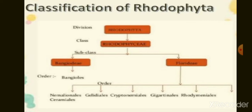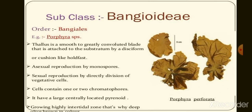Class Rhodophyta is divided into two subclasses: Bangiodeae and Florideae. General characteristics of Bangiodeae, with Porphyra as an example: the thallus is a greatly convoluted blade attached to the substratum by a disc-form or cushion-like holdfast. Asexual reproduction is by monospores. Sexual reproduction is directly from vegetative cells. Cells contain one or two chromatophores and large centrally located pyrenoids.